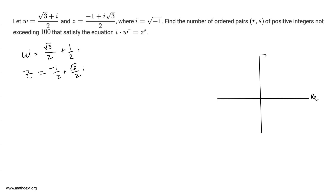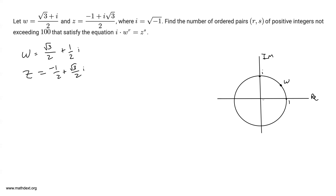We have our real axis and our imaginary axis, and we draw the unit circle, which has radius 1. So this over here is 1 on the real axis, and this is i. W has real part root 3 over 2 and imaginary part 1 half, so it's somewhere around here on the unit circle. You can verify that w is on the unit circle by computing its magnitude.